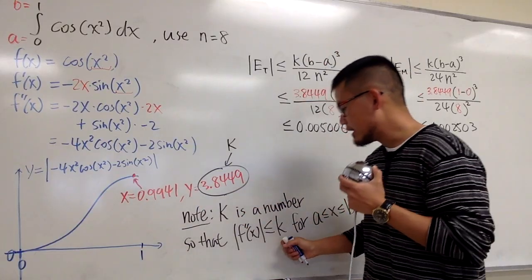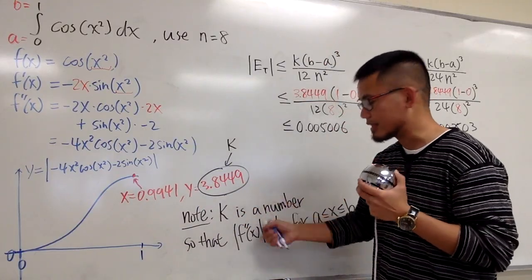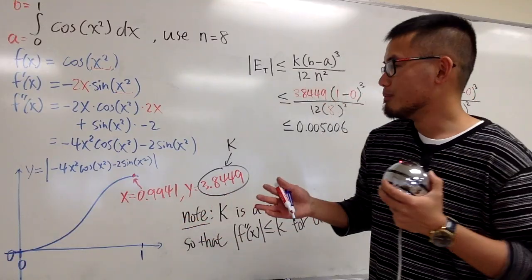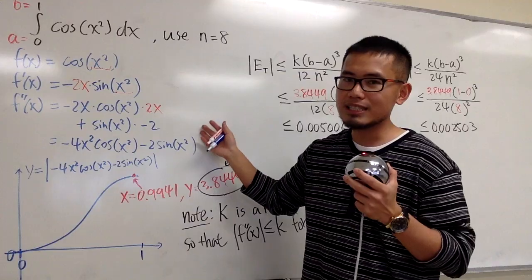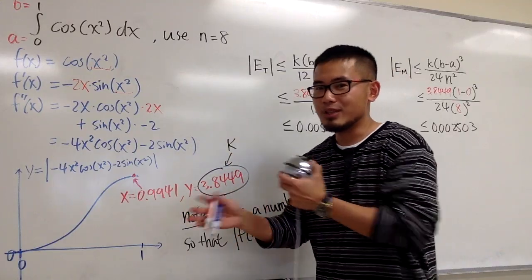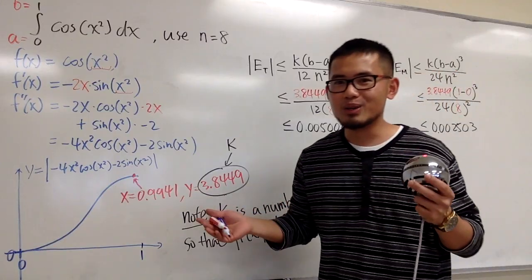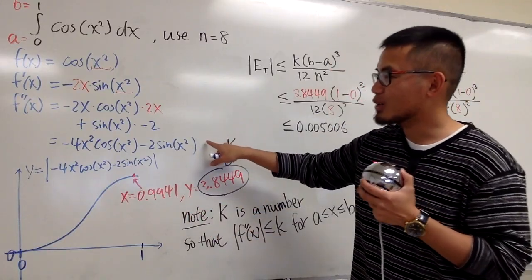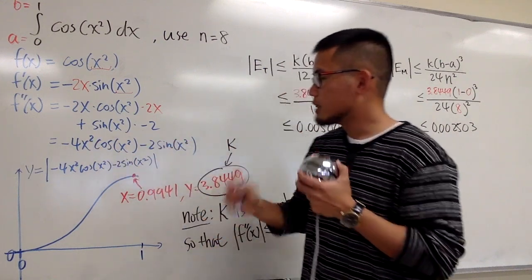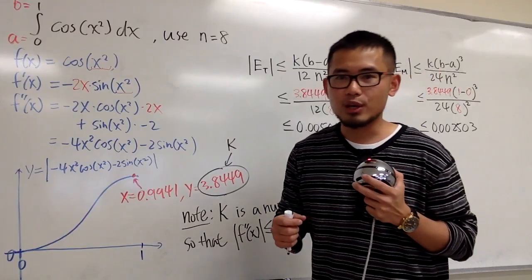To find the maximum of the absolute value of the second derivative, I'll use a graphing calculator. The typical way is to differentiate again, set it equal to zero, and find critical values, but most likely you'll need a calculator anyway. This graph represents the absolute value of the second derivative, with the window focused on x from 0 to 1.